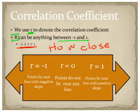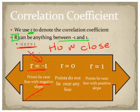If you have a line that fits the data pretty well, the points are going to push r near one or negative one depending on the slope. If the line has a negative slope and the points are near the line, you're going to be closer to negative one. Now, if the points don't lie anywhere near the line — they're all over the place — then we know that our r value is going to be closer to zero than to negative one or one.